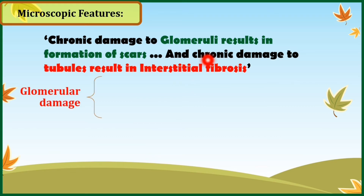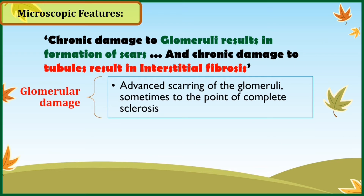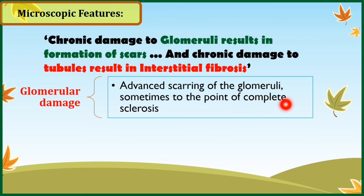The first keyword is damage at the level of glomeruli. This glomerular damage will be visible as advanced scarring of glomeruli, sometimes to the point of complete sclerosis, meaning that glomeruli are damaged and replaced by scars, and sometimes these scars cause narrowing of the glomeruli to the point of complete obliteration.